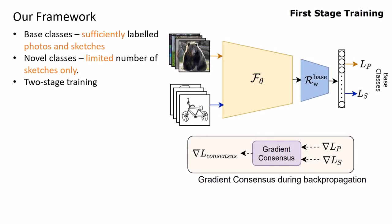In the first stage, we train a feature extractor and a linear classifier for base classes using standard cross-entropy loss. Having sufficient data, we combine labeled photos and sketch images for it to generalize well on both modalities, curating a total cross-entropy loss as shown.